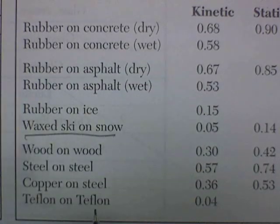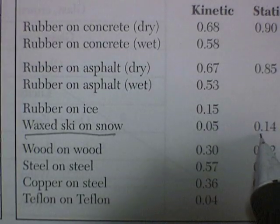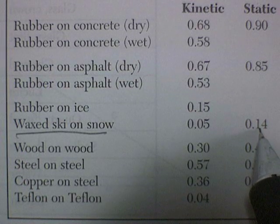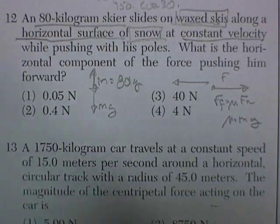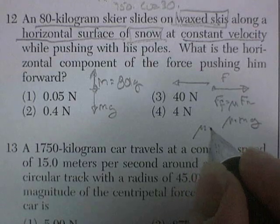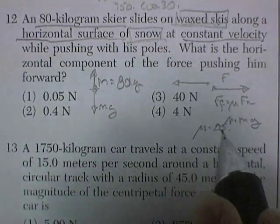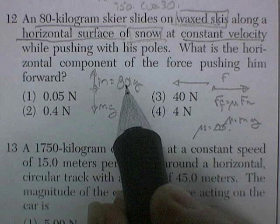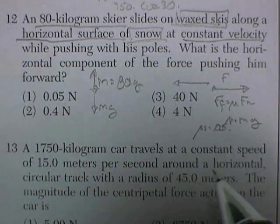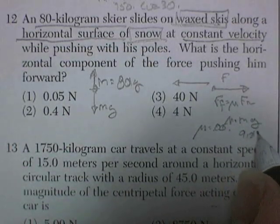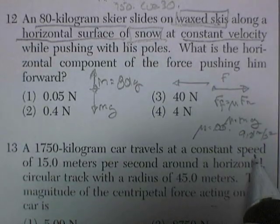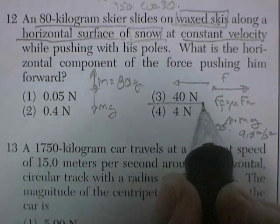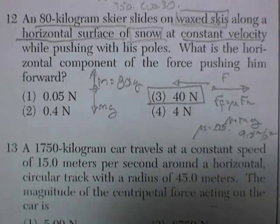Wax skis on snow — there it is on the formula sheet. Now, if he was stationary and just trying to get moving, he would need to overcome that frictional force. But he's already moving, so he simply has to overcome a mu of 0.05. So it's 0.05 times 80 kilograms times 9.8 meters per second squared — and that's going to be real close to 40 newtons when you punch it into the calculator.